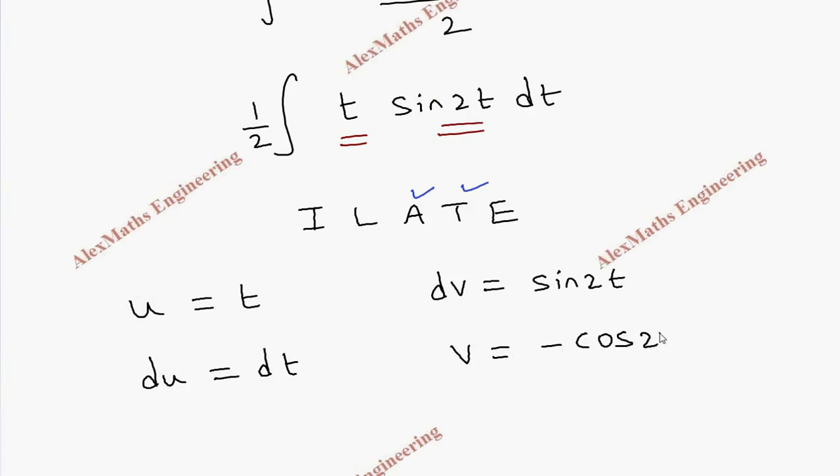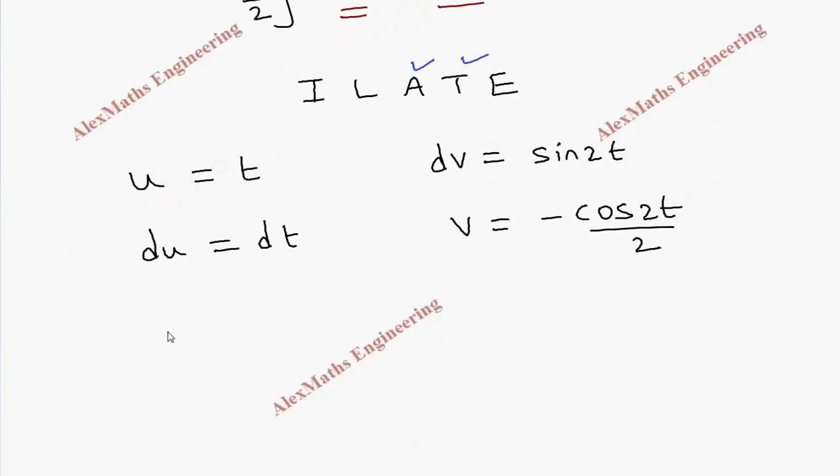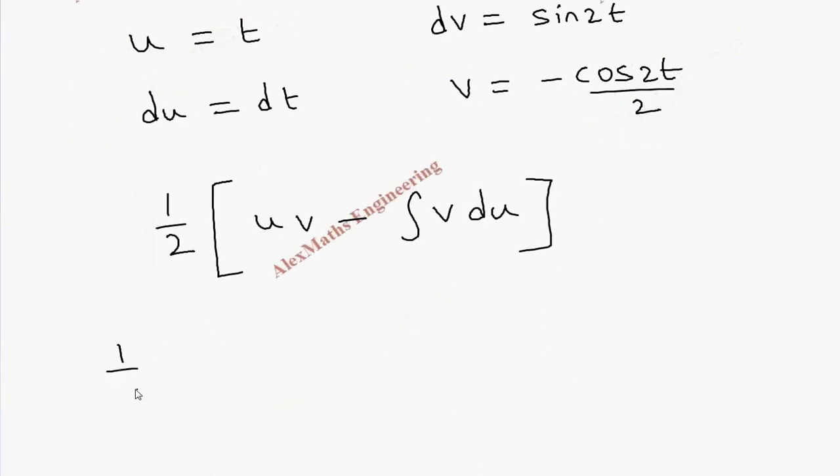That is minus cos 2t by 2. Let's substitute this in the formula. We have half bracket open. The formula is uv minus integral v du.